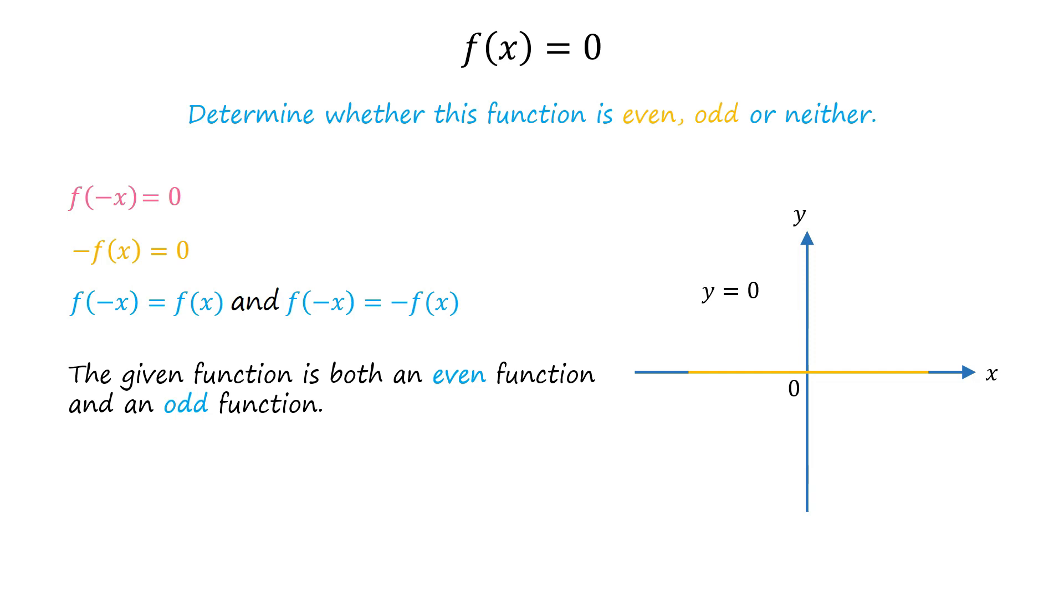The graph of this function lies along the x-axis and is symmetric about the origin, as well as the y-axis. In fact, f of x equals 0 is the only real function that is both an even function and an odd function.